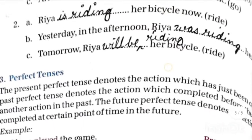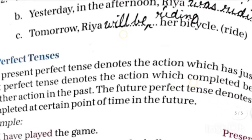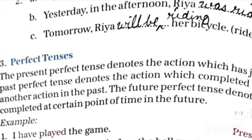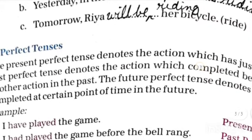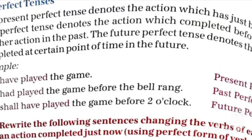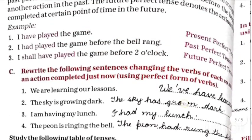The perfect tense denotes actions which are already completed. There are three perfect tenses: present perfect denotes an action which is now complete, past perfect denotes an action completed before another action in the past, and future perfect denotes an action that will be complete at a certain point in the future. For example: 'I have played the game' (present perfect), 'I had played the game before the bell rang' (past perfect), and 'I shall have played the game before two o'clock' (future perfect). Basically, perfect tense denotes completed action.